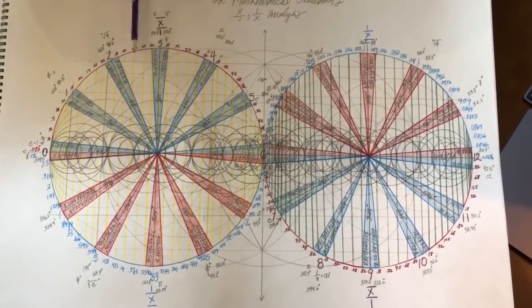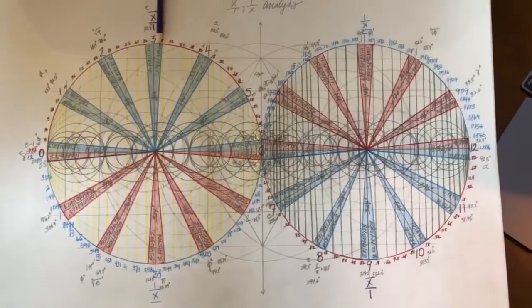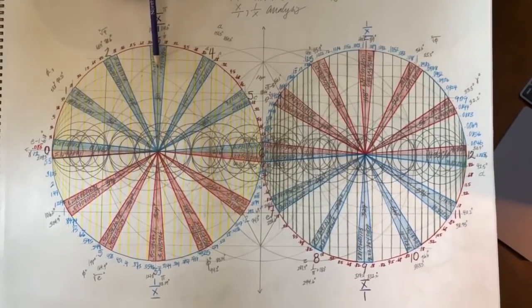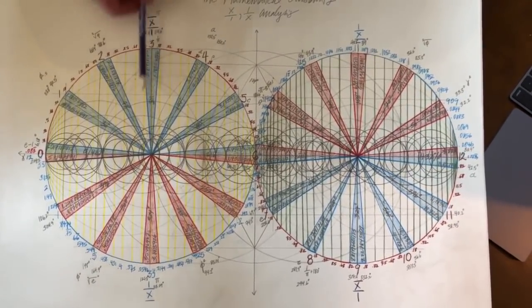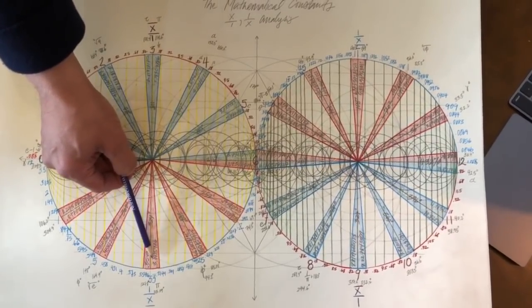These boundary conditions, for example, would be 1 over pi times 10, which is 3.183. And then pi would be down here, mirrored opposite.